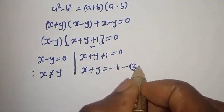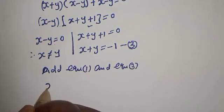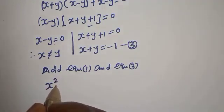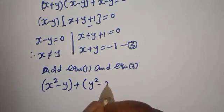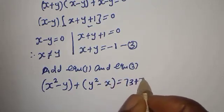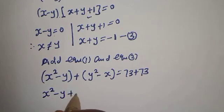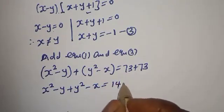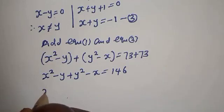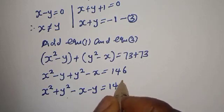So we consider the second case: x plus y plus 1 equals 0, therefore x plus y equals minus 1. Let's call this equation 3. Now let's add equation 1 and equation 2: x squared minus y plus y squared minus x equals 73 plus 73. This gives x squared plus y squared minus x minus y equals 146.